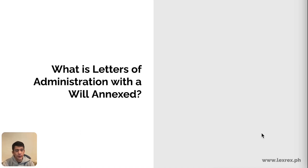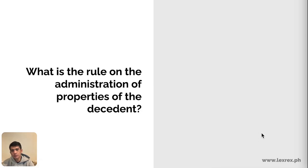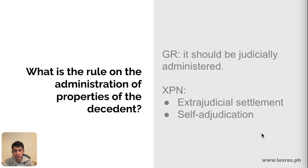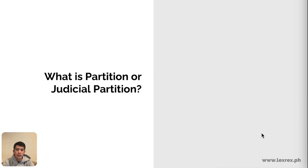What is Letters of Administration with the Will Annexed? This is a document issued by a probate court when the decedent left a valid will but no executor was named. As to the rule on administration: properties of a decedent should be judicially administered, except where there is an extrajudicial settlement, an affidavit of self-adjudication with only one heir, and no court intervention is needed.